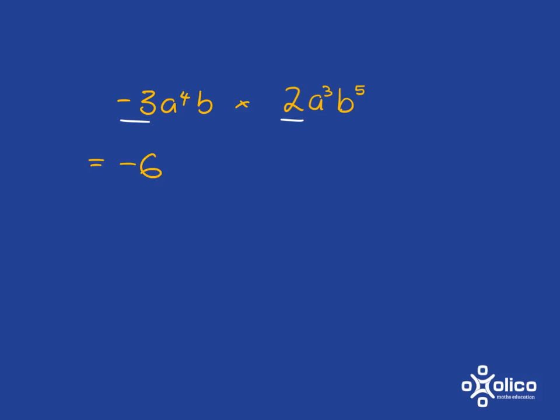We then move on to our a's. So here we've got a to the 4 multiplied by a to the 3. And so we've got a to the 4 plus 3, just using our exponent law.